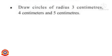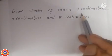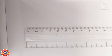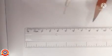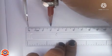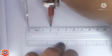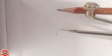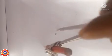Draw circles of radius three centimeters, four centimeters, and five centimeters. At first, draw a circle of radius three centimeters. Mark the center of the circle — it is denoted as C. Take the ruler and compass, then take the measure of three centimeters in the compass. Note that the distance between the pointed end of the compass and the tip of the pencil should be three centimeters.